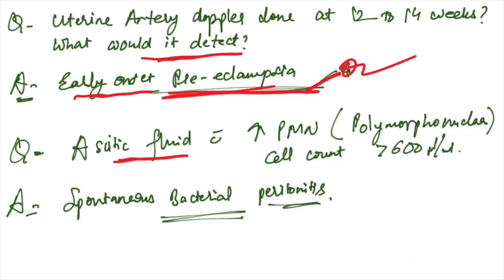Ascitic fluid which has increased PMN cell count, polymorphonuclear cells greater than 600 per ml. What does it indicate? It indicates spontaneous bacterial peritonitis.